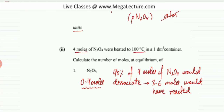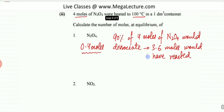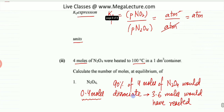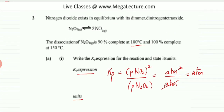We also need to find the moles of NO2 produced. N2O4 is 90% reacting, meaning 3.6 moles have reacted. From the equation, the ratio is 1:2 — 1 mole of N2O4 produces 2 moles of NO2. So 3.6 moles of N2O4 produce 7.2 moles of NO2.